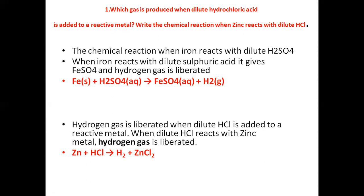Second part: write the chemical reaction when Zinc reacts with dilute HCl. When dilute HCl is added to a reactive metal Zinc (Zn), Hydrogen gas is liberated. Zinc is more reactive, so it replaces Hydrogen — Hydrogen gas is liberated and ZnCl2 is formed as product.